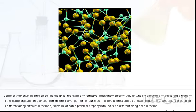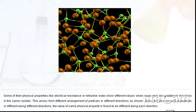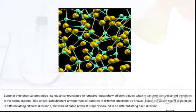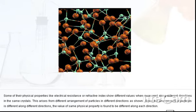Some of their physical properties like electrical resistance or refractive index show different values when measured along different directions in the same crystal. This arises from different arrangement of particles in different directions as shown. Since the arrangement of particles is different along different directions, the value of same physical property is found to be different along each direction.